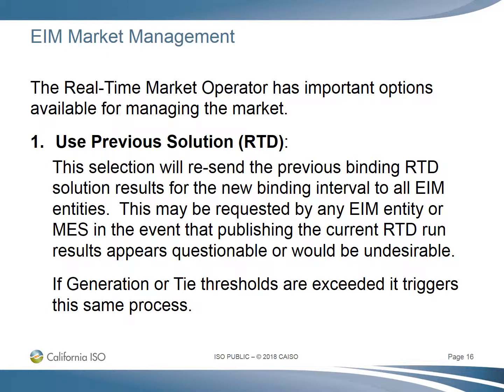The real-time market operator also has important options available for managing the market and ETSRs. The first is Use Previous Solution, which is available in the RTD timeframe. This selection resends the previous binding RTD solution results for the new binding interval to all EIM entities. This may be requested by an EIM entity or by Market Engineering Services in the event that publishing the current RTD run results appears questionable or undesirable. If generation or tie thresholds are exceeded, it triggers this same process.